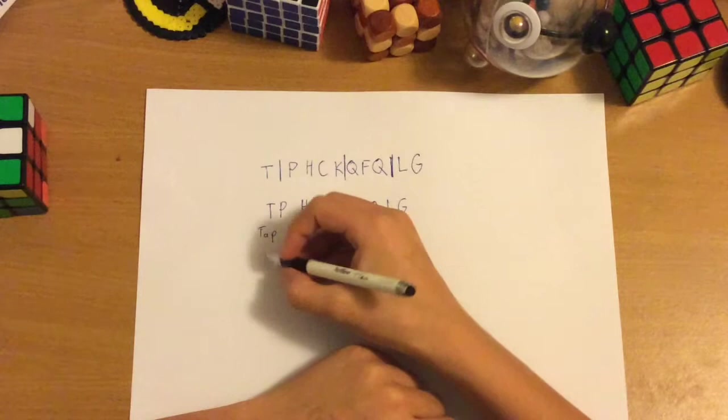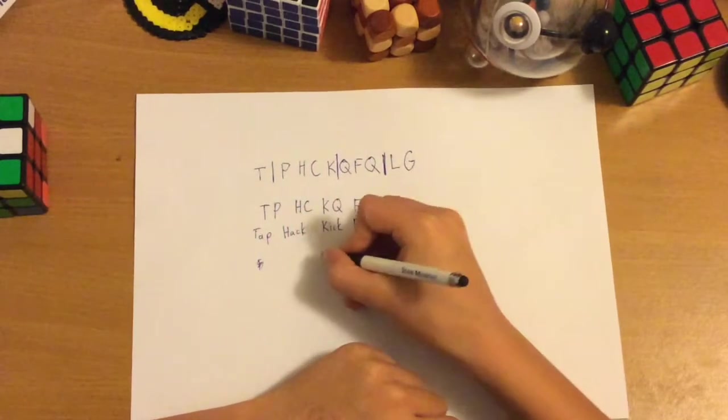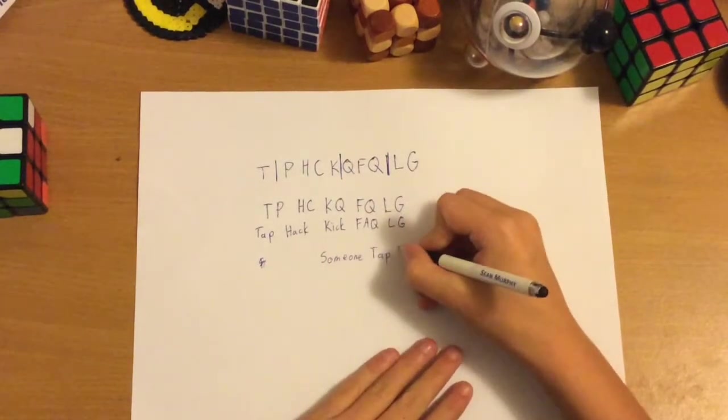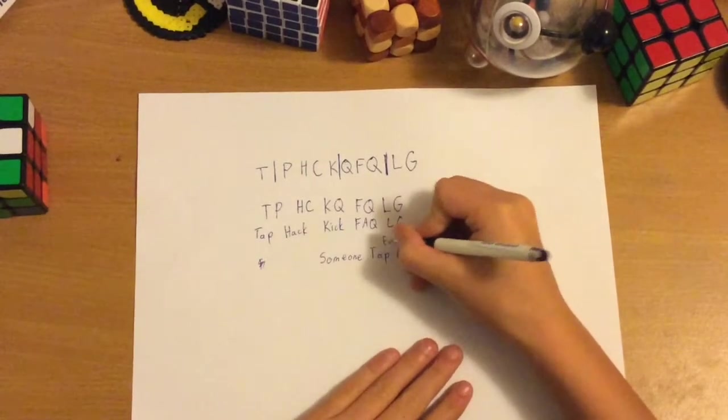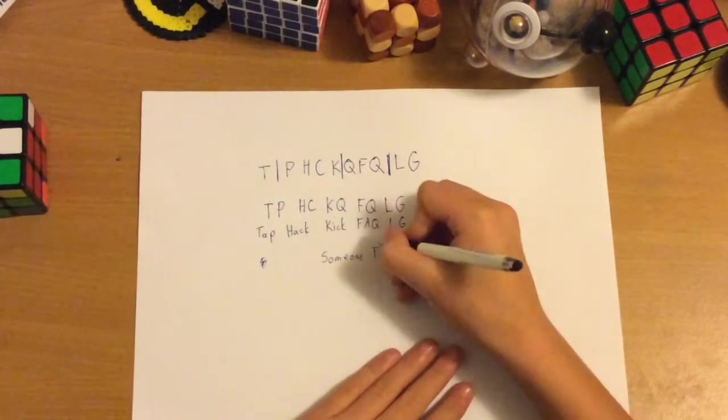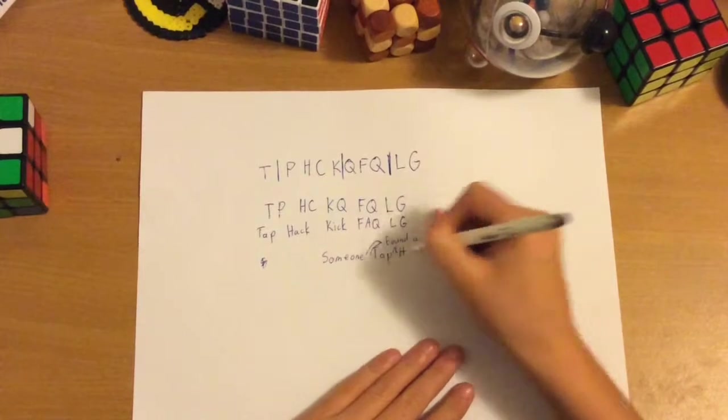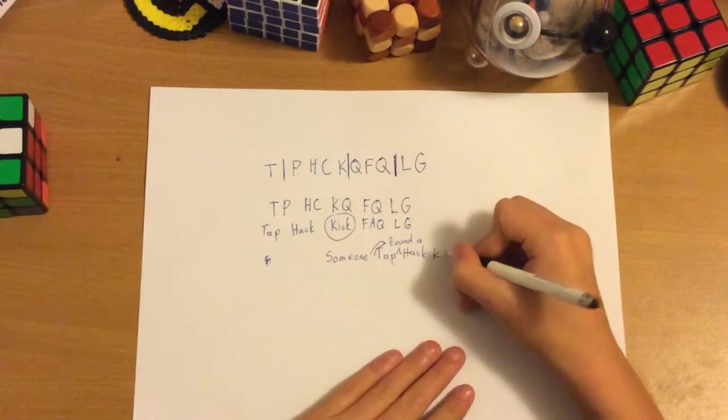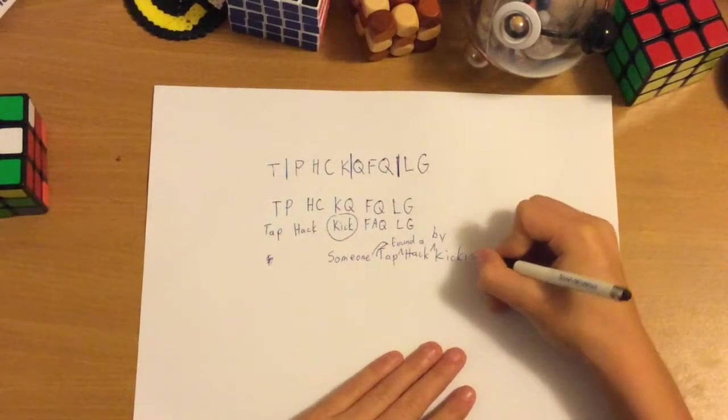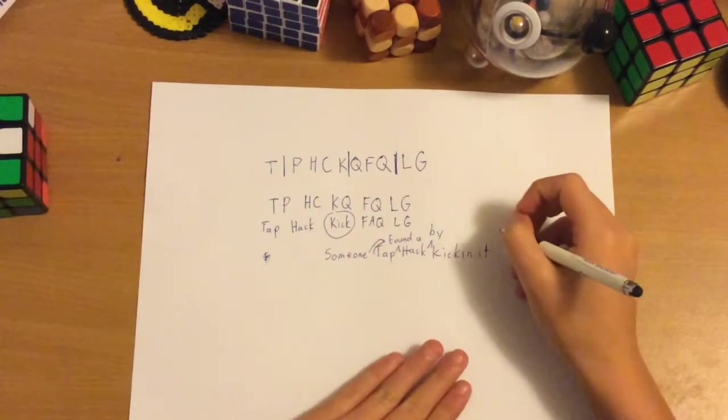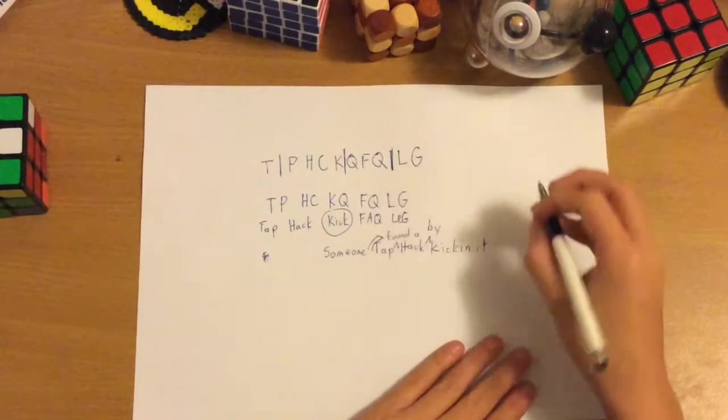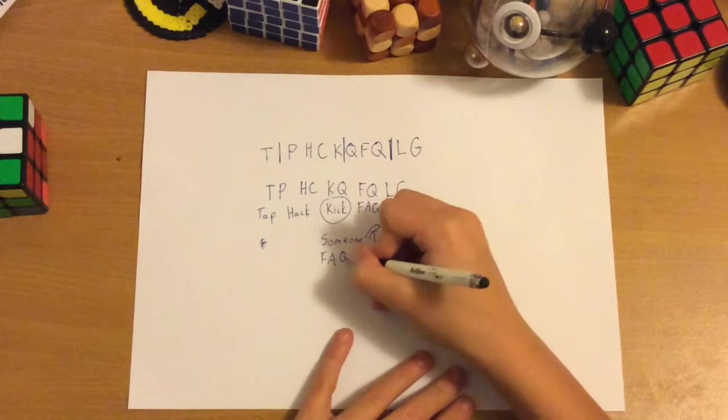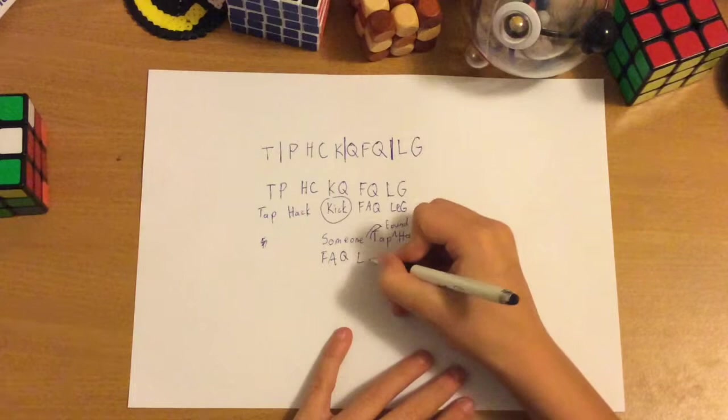So, in our memorization, we can remember that someone hacked the tap. So, I'll just write out a sentence. So, someone found a tap hack, maybe? That's better. Someone found a tap hack by kicking it. So, we found out how to get rid of this hack by looking in the frequently asked questions. And what you have to do is, maybe, jam your leg through it. So, if we can remember that.